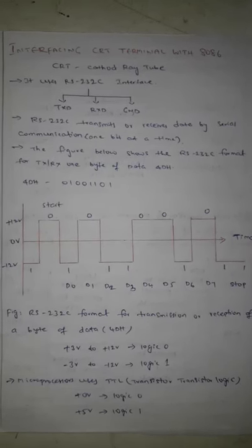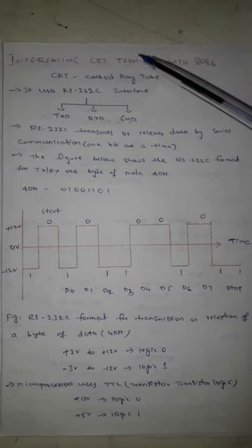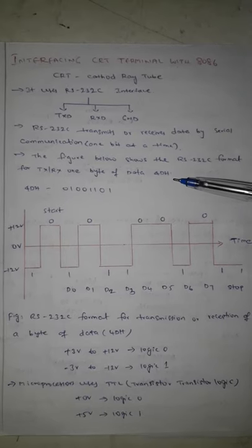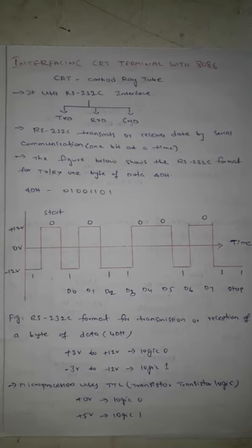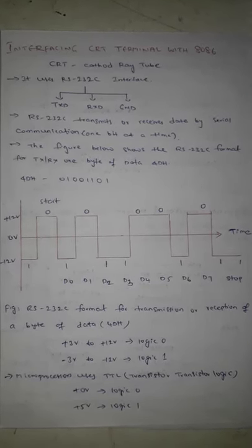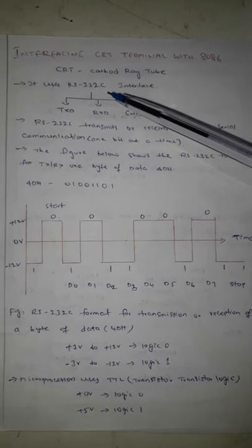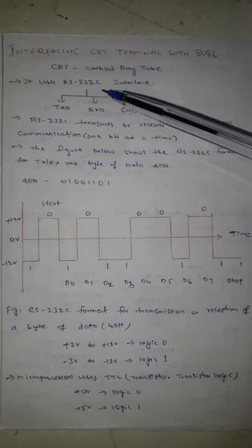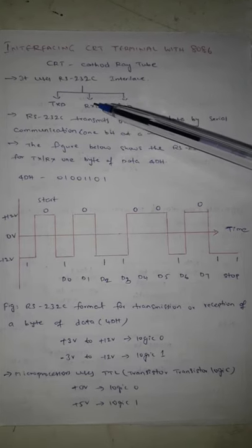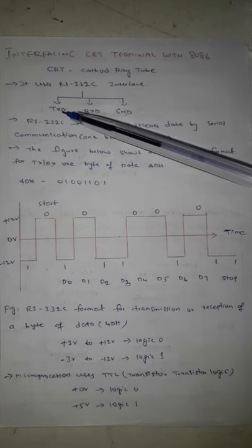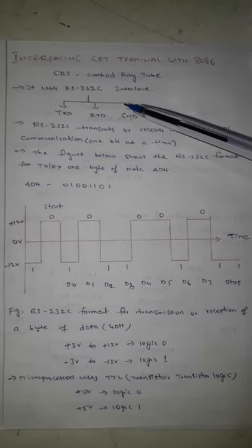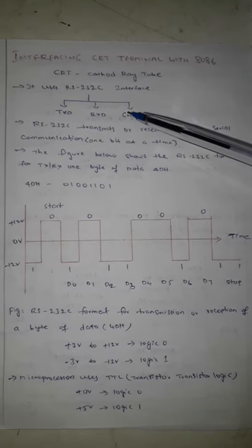In this video lecture, we will see how to interface a CRT terminal with the 8085 processor. CRT stands for cathode ray tube, and we all know CRT is used to display images, popularly used in televisions and computer screens. The CRT uses RS-232 interface, which stands for Recommended Standard 232C. This RS-232C has mainly three signals: TXD, RxD, and ground. TXD is used to transmit data from the CRT terminal to the processor, and RxD is used to receive data from the processor.